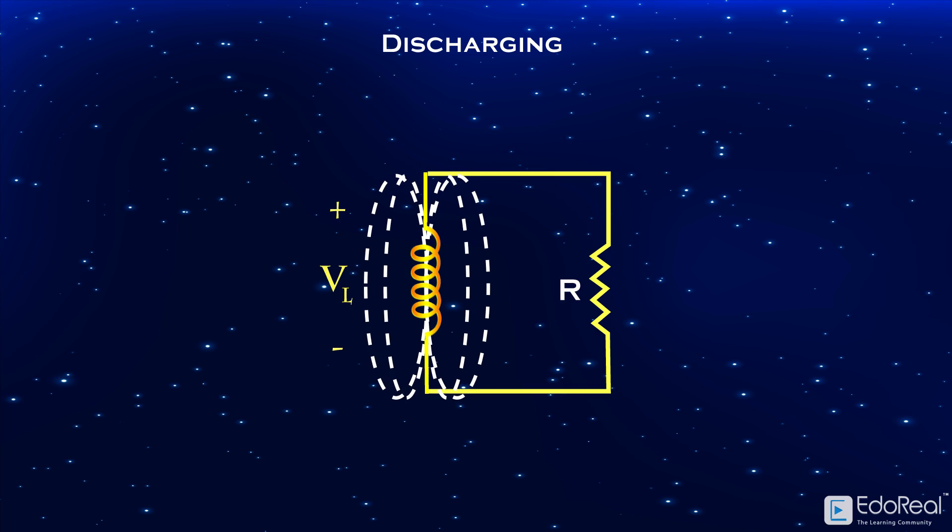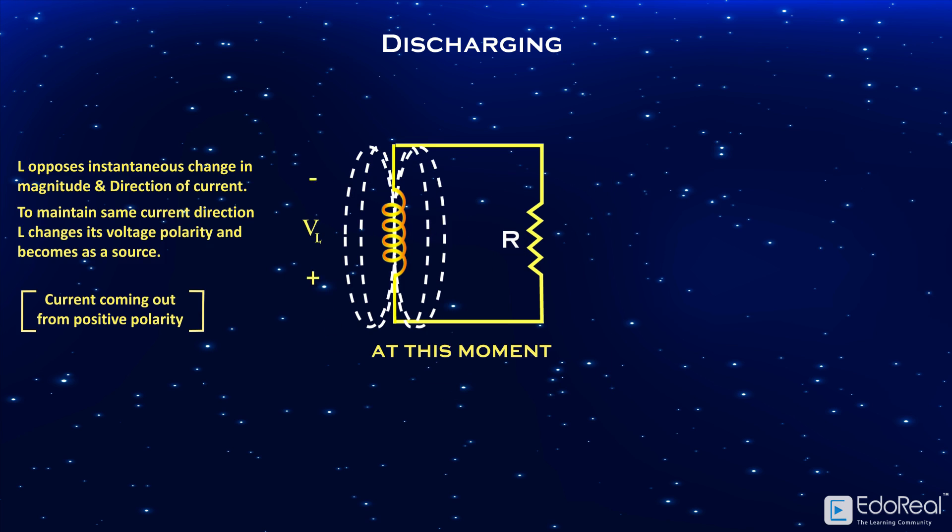The moment the resistor is connected, a huge number of electrons try to flow through the circuit. That is, the change in current is high, which means the change in flux is also high. Due to this change in flux, a high back EMF will be developed across the inductor which will oppose the change in current.